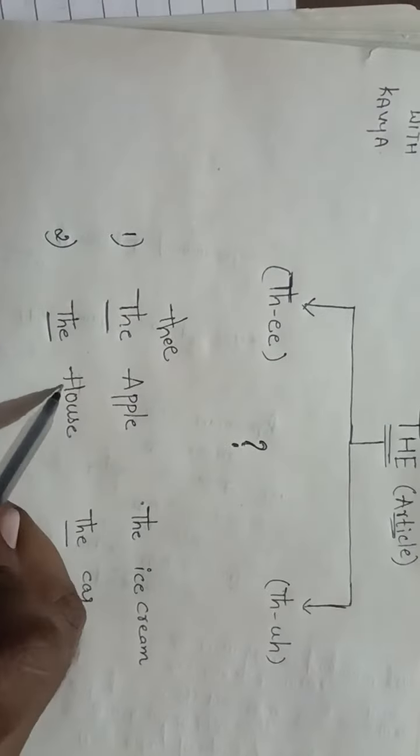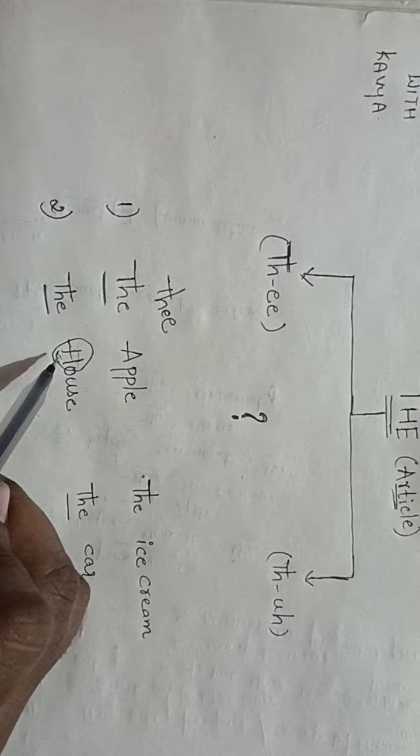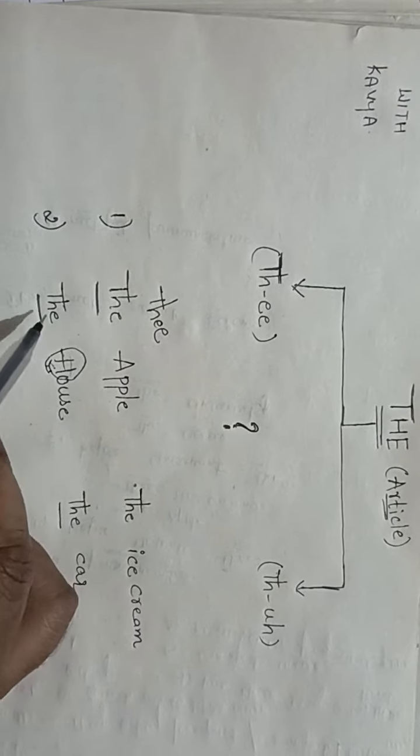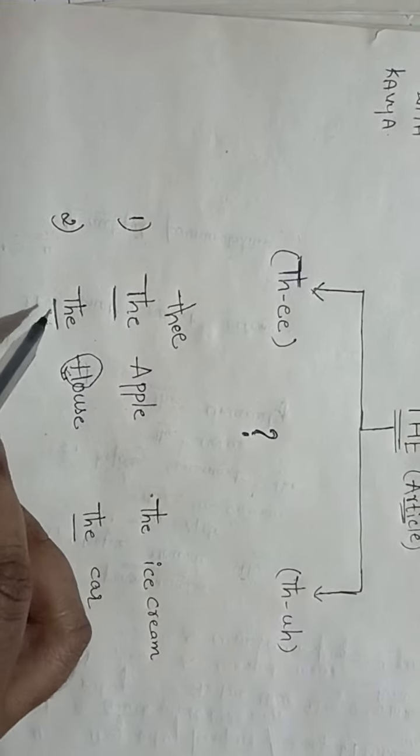Here it is not a vowel, it is a consonant. So when you write T-H-E before the consonant, then you have to pronounce this T-H-E as 'the', the short 'the'.